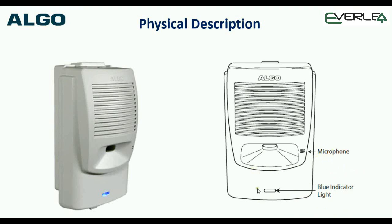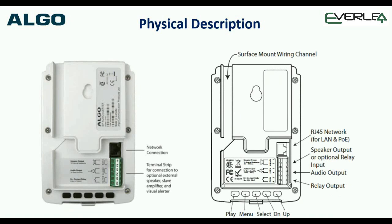The blue light indicator at the bottom tells you the status of the system, what's happening with it, and you can also program it to be a message waiting light if you wish. For example, if there's a message in the office for somebody, it'll sit there flashing blue — just another little trick you can do with the unit.